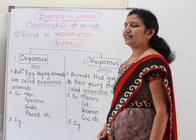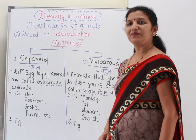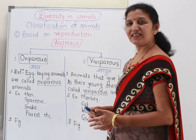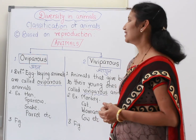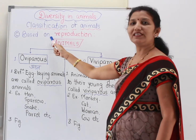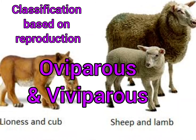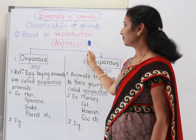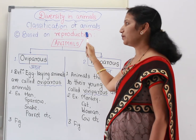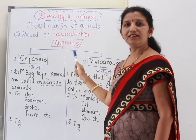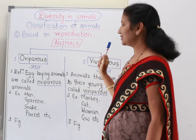Children, now we will study the next type of classification of animals and that is based on reproduction. The criteria is reproduction. The way of reproduction decides these two classes of animals.